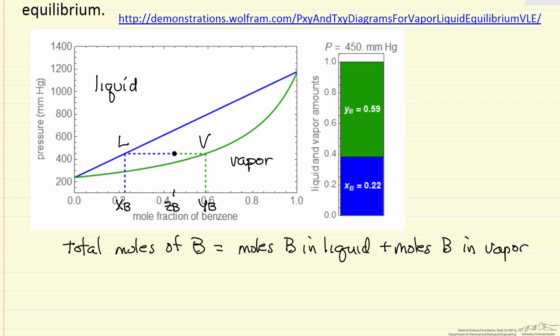So we'll call that ZB. So total number of moles, we have liquid plus vapor, so total number of moles in the system is the number of moles of liquid plus the number of moles of vapor. If we multiply that by the mole fraction for the total amount, that's now the moles of B in our system.